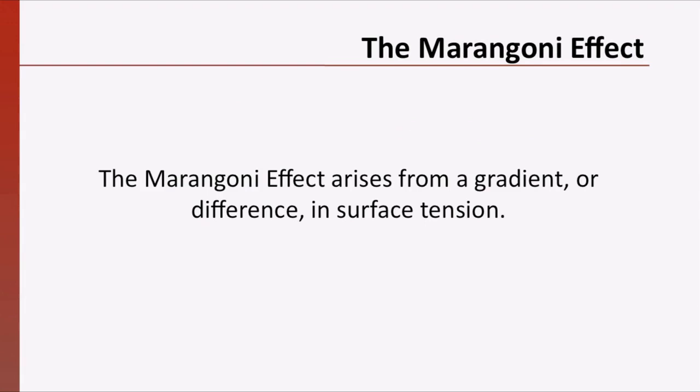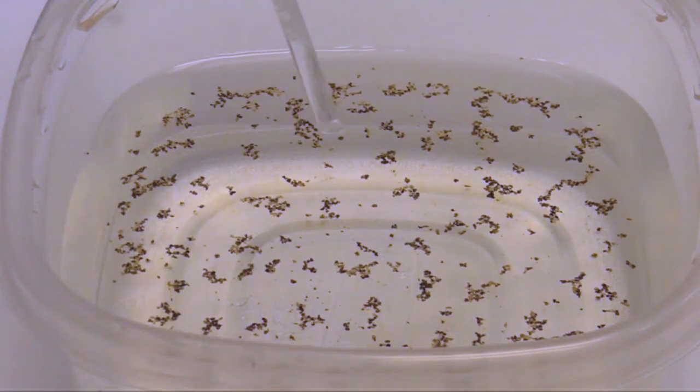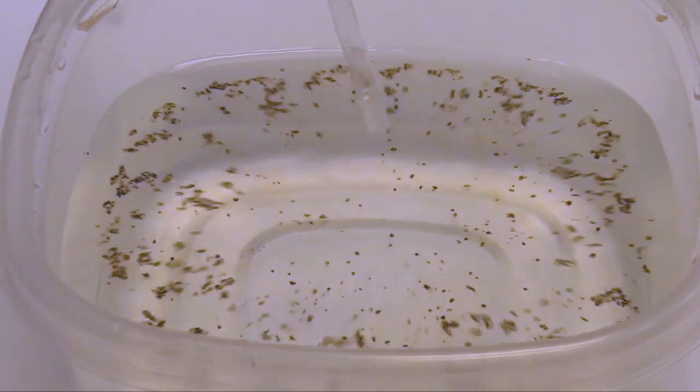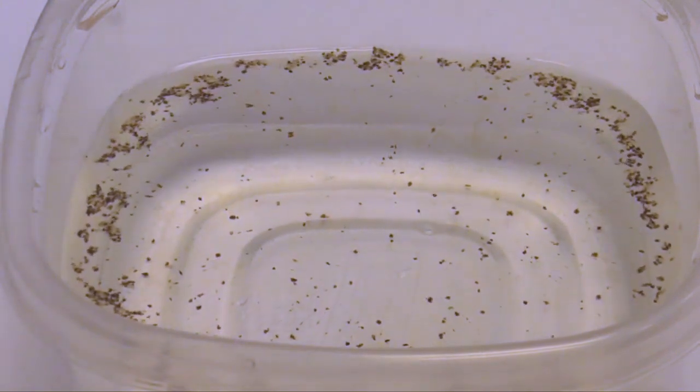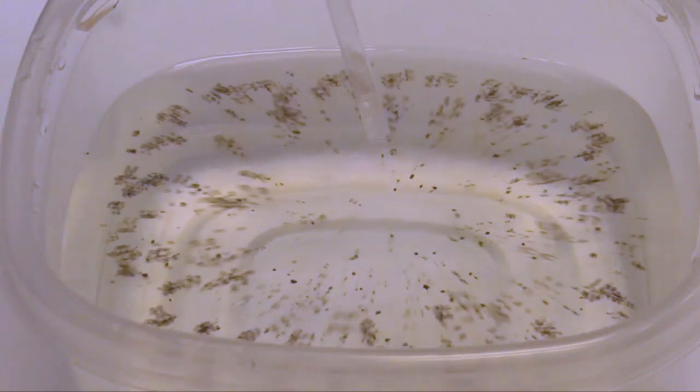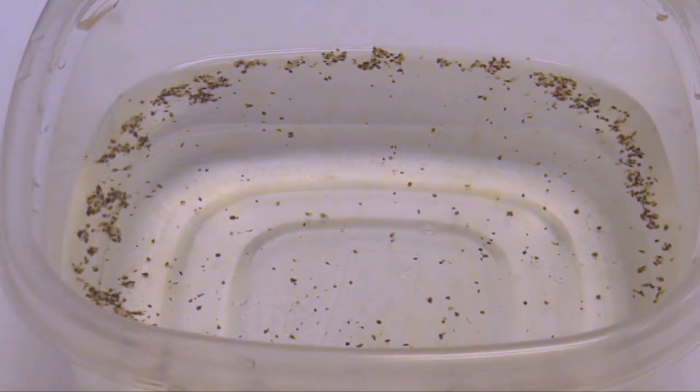Learning about the Marangoni effect inspired my design. The Marangoni effect arises from a gradient or difference in surface tension. We can see the Marangoni effect by adding a drop of soap solution to a container of water. The soap solution reduces the surface tension of the water locally, causing flow. Using black pepper flakes as a tracer, we can visualize the flow away from the area of low surface tension.